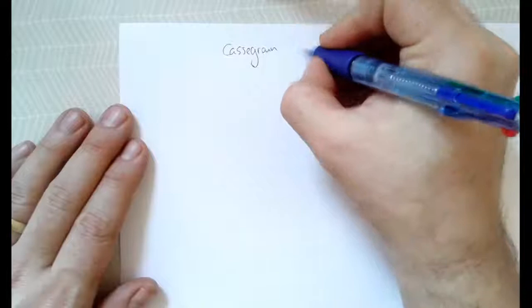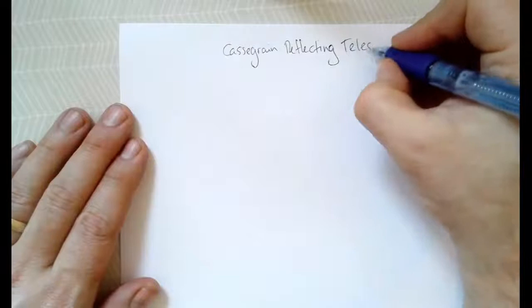Hello Year 13, today we're going to look at how to draw a Cassegrain Reflecting Telescope. I think the best way to do this is if you grab yourself a piece of paper, a pen or a pencil and a ruler and draw along as we go.